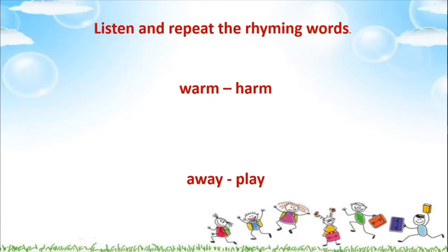Now there is one more pair of rhyming words in the poem — that is your homework. You have to find out which is the third pair of rhyming words in the poem. So read the poem and you will find it. So once again, the rhyming words we covered are: warm and harm; away and play — and there is one more which you have to find by reading the poem.